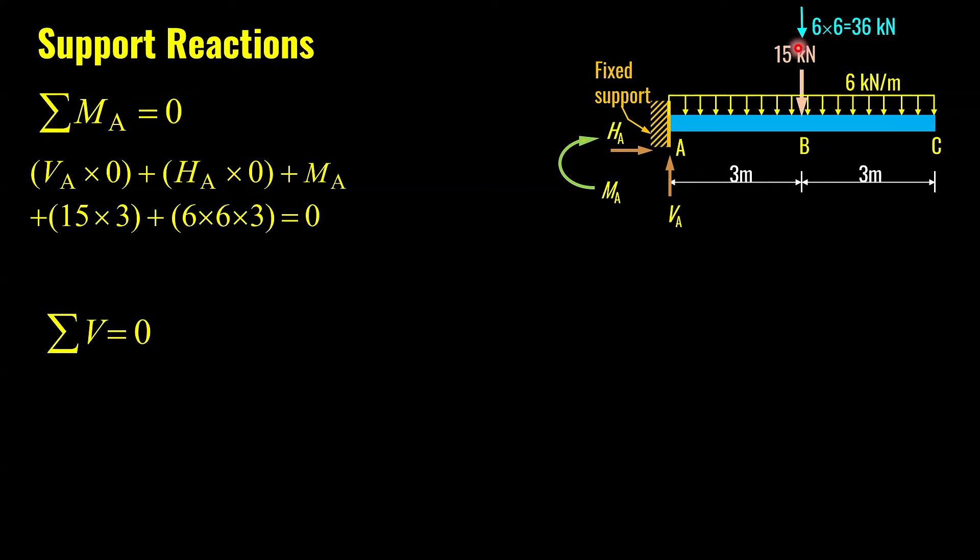This 15 kN mid-span point load will generate moment with respect to A, and the distance between 15 and A is 3 meters. So we will multiply 15 with 3. It is creating a clockwise moment with respect to A. And UDL, total load 36 kN, it will generate a moment with respect to A as well. And the distance is 3. We equate everything to zero, and then we get MA is equal to minus 153 kN meter.